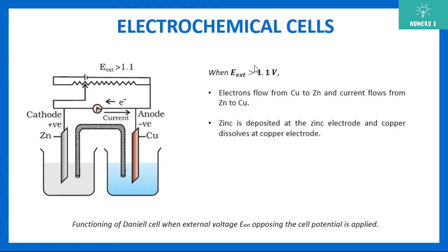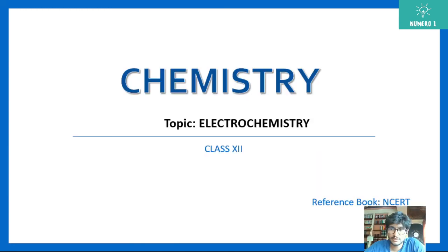If the external potential is increased above 1.1 volts, the direction of current changes. The current now flows towards the right — from the zinc side to copper — so electrons flow from copper to zinc. In this case, zinc is deposited at the zinc electrode and copper is getting dissolved at the copper electrode. That's it for the first session, see you all in the next one!